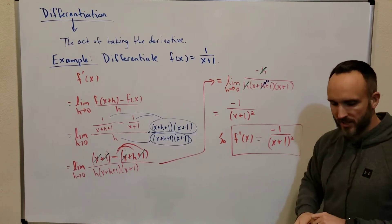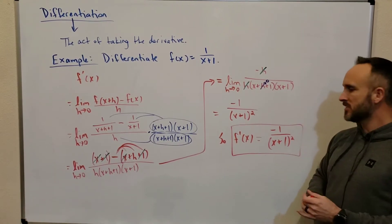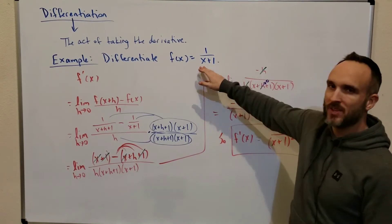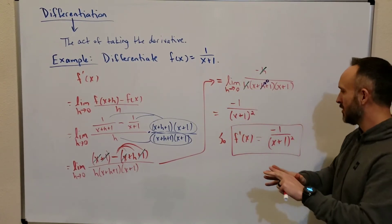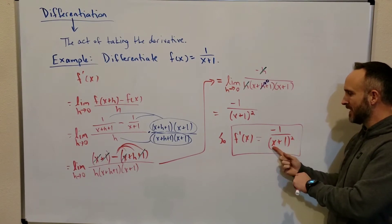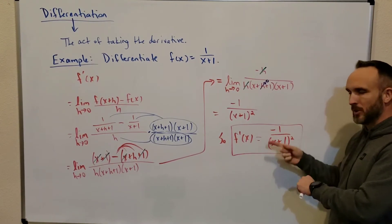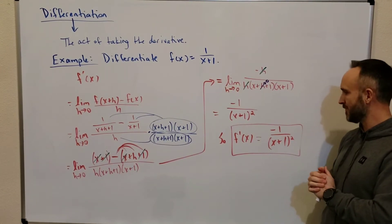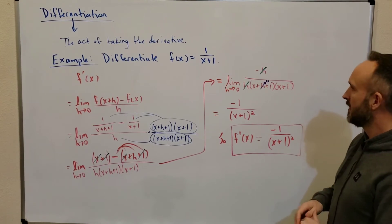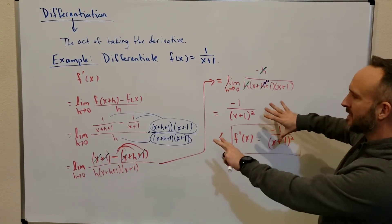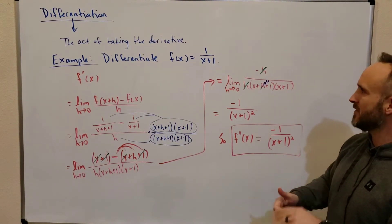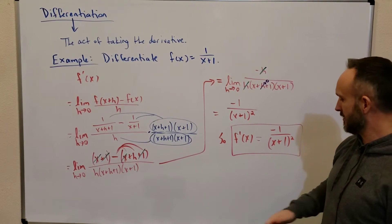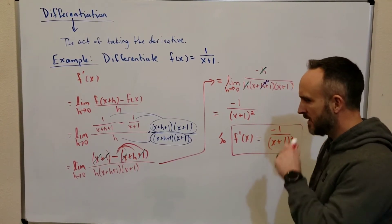So what that helps us with is: if we want to know the slope of the tangent line to this original curve at any x value, we can plug x in here, and the output of this formula would be the slope of the tangent line to the f function at that value. Pretty cool stuff. But here was practice with complex fractions, limits, derivatives, and also the language of 'differentiate' — understanding what that means. Let's do another example.